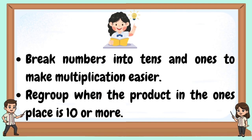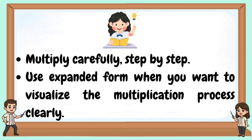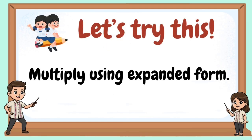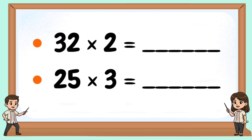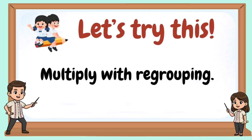Break numbers into tens and ones to make multiplication easier. Regroup when the product in the ones place is 10 or more. Multiply carefully, step by step. Use expanded form when you want to visualize the multiplication process clearly. Let's try this — multiply using expanded form. Let's try this — multiply with regrouping.